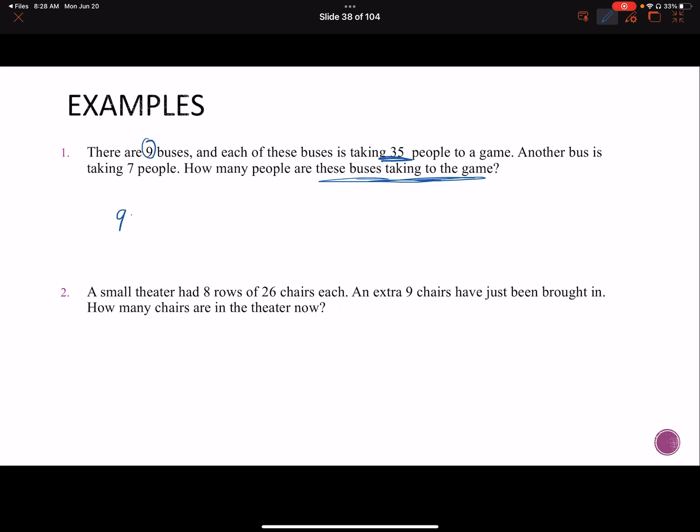So I know my first bus, there are nine of them. Each of them was 35 people. So if I take nine times 35, that'll tell me the number of people in those first few buses. But I'm not done, because I've got one other bus that seems way less crowded. That's the bus I'd like to be on. That only has seven people on it. If you hear that meowing, that's my cat, Bobby. She likes to do math in the morning with me. But I've got nine times 35 plus seven. So nine times 35 is 315 plus seven. That gives me 322. So how many people are these buses taking to the game? 322 people.